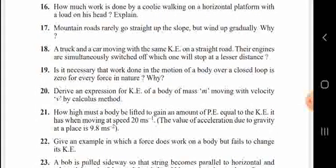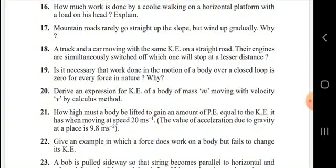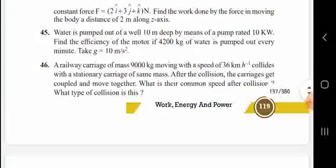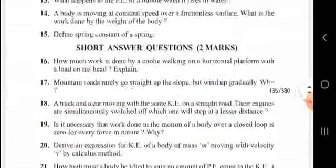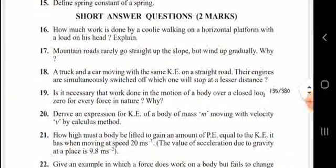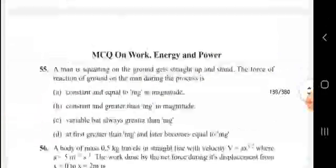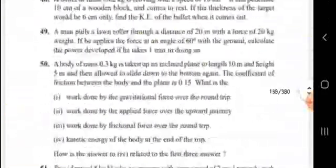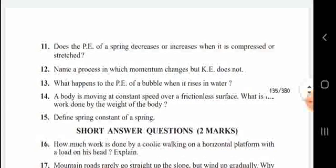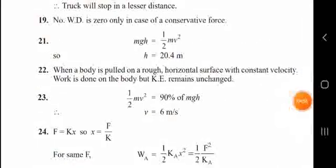Numerical: How high must a body be lifted to gain potential energy equal to its kinetic energy when moving at 20 m/s? Setting PE = KE: mgh = ½mv², so h = v²/2g = 400/20 = 20.4 meters.